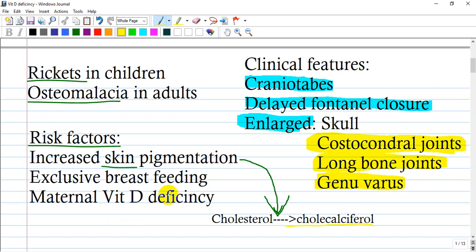Maternal vitamin D deficiency throughout pregnancy is also a risk factor. Through the placenta go minerals, vitamins, and other nutrients and oxygen. But if the mother is deficient in vitamin D, a low dose will go to the fetus.